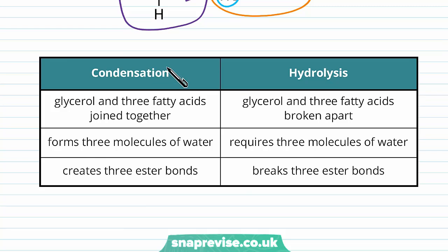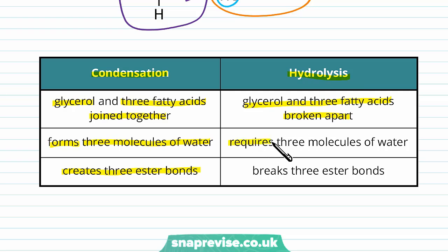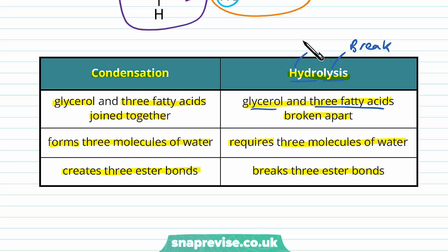Here's a summary table of the two types of reactions. In condensation, glycerol and three fatty acids are joined together to make a triglyceride, forming three molecules of water and creating three ester bonds. In hydrolysis, the glycerol and three fatty acids are broken apart and reformed, requiring the input of three molecules of water and breaking three ester bonds. To remember the difference: lysis means to break, so hydrolysis breaks the triglyceride into its components, and hydro means water, meaning we need water in order to break these things apart.